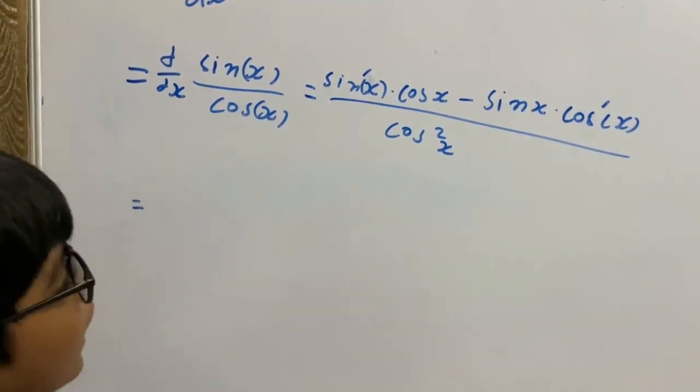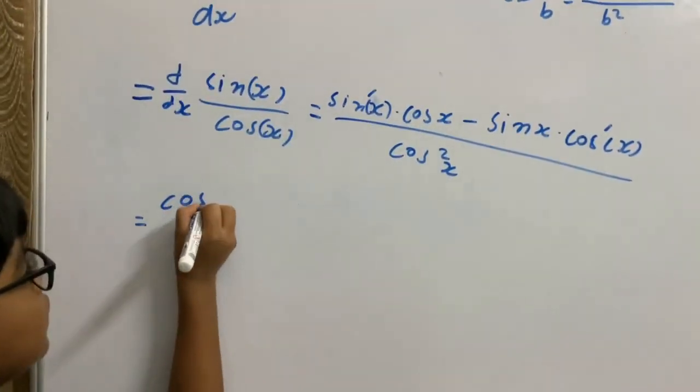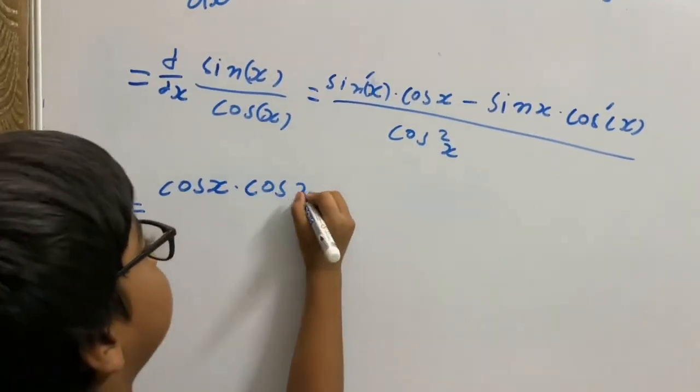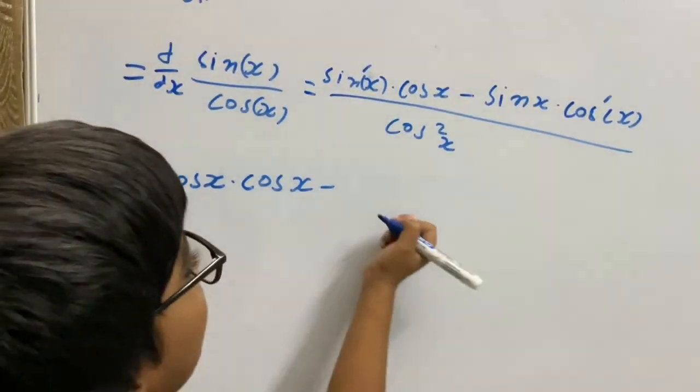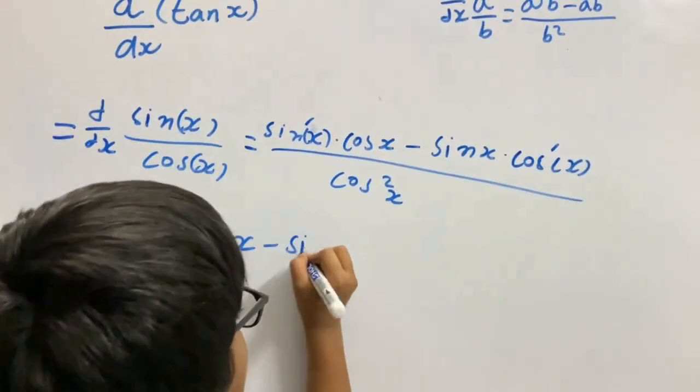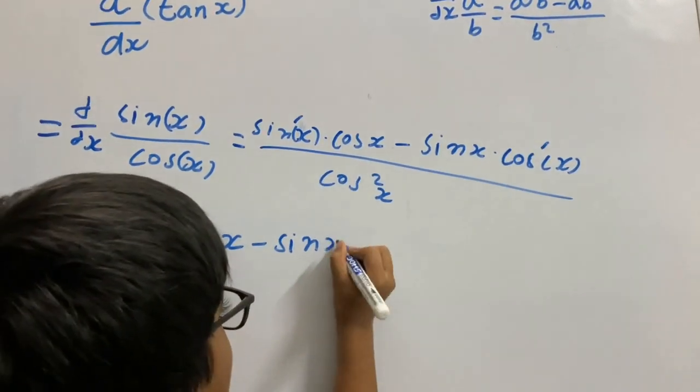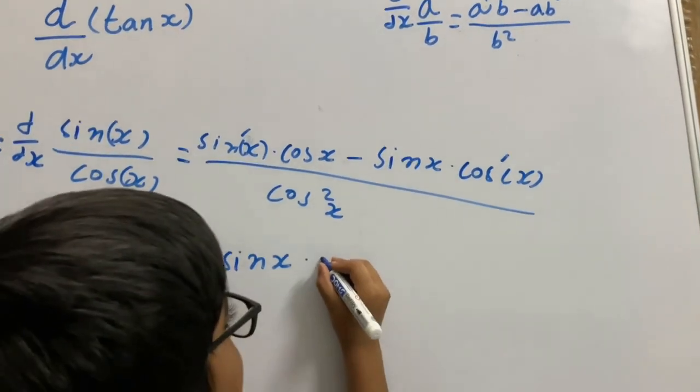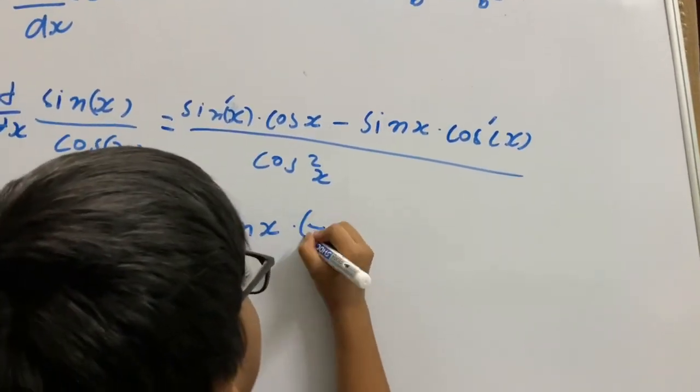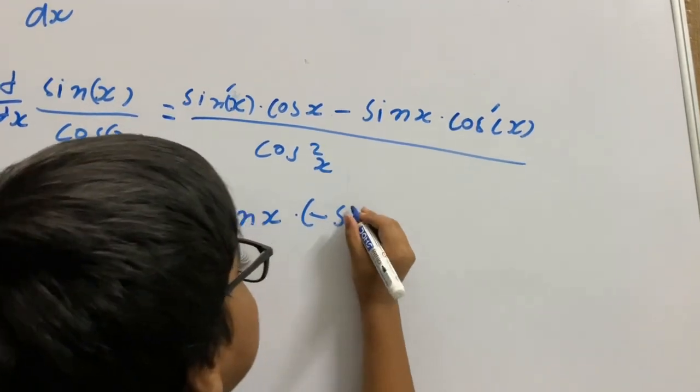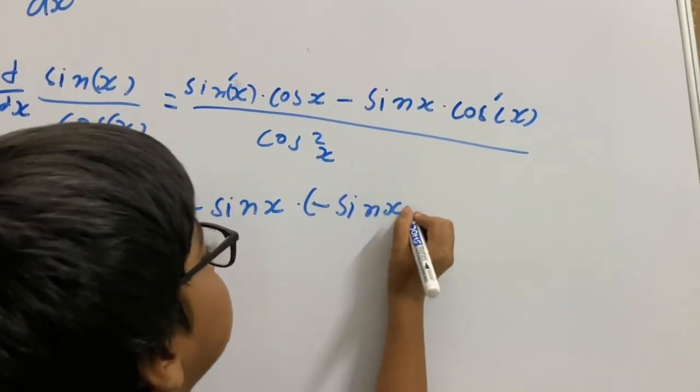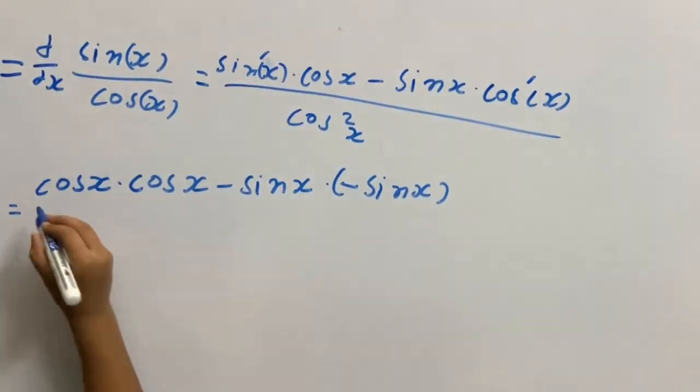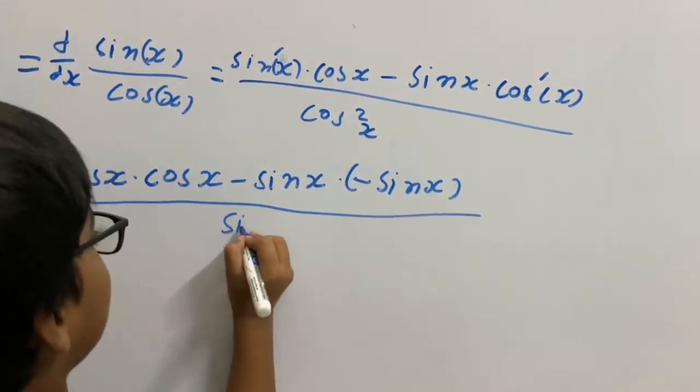The derivative of sin x is cos x times cos x, minus sin x times minus sin x. The derivative of cos x is minus sin x, divided by cos squared x.